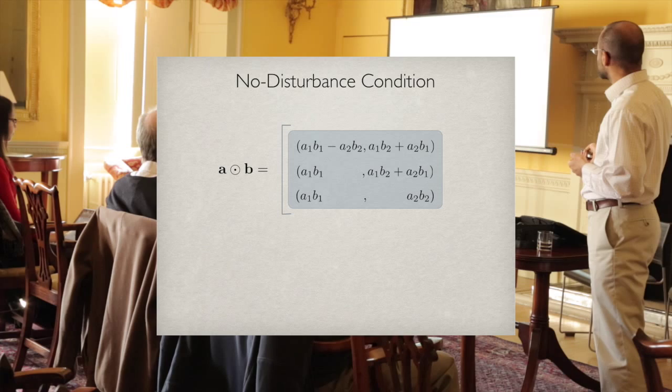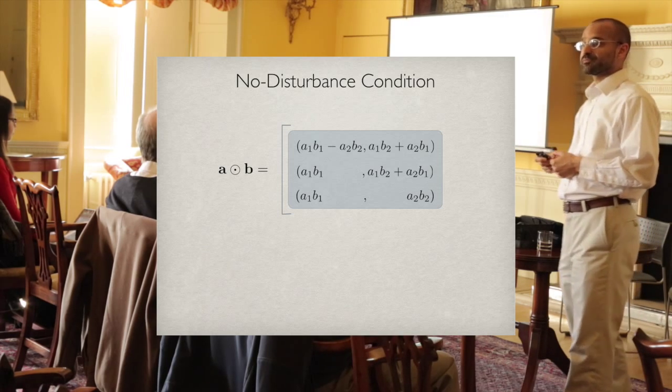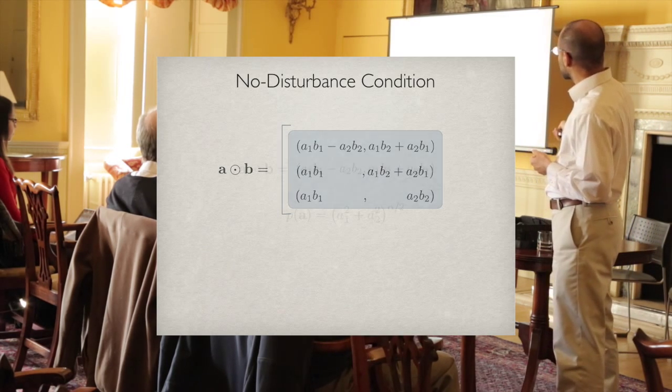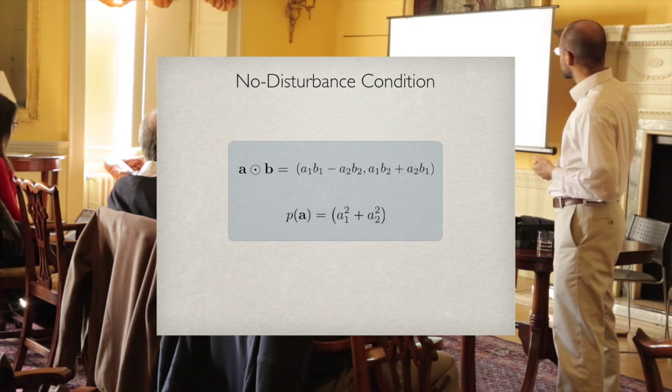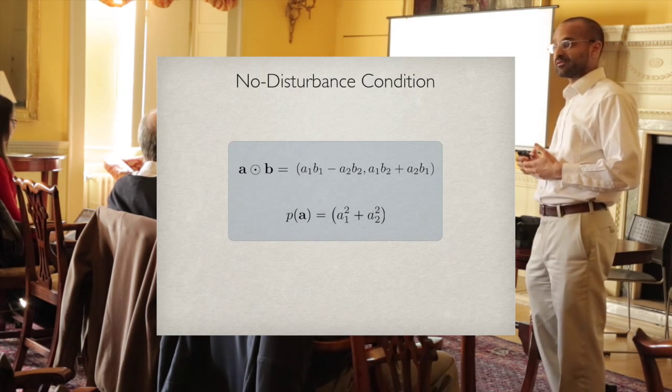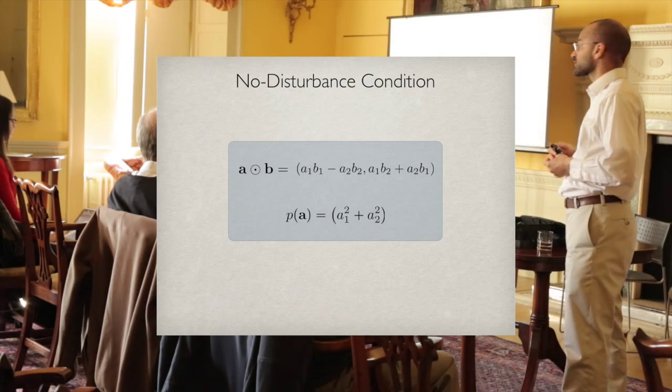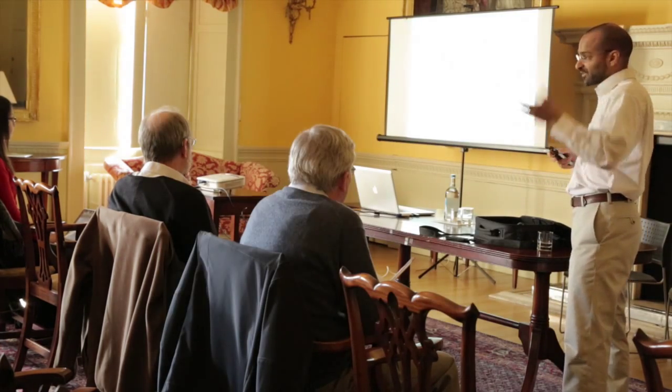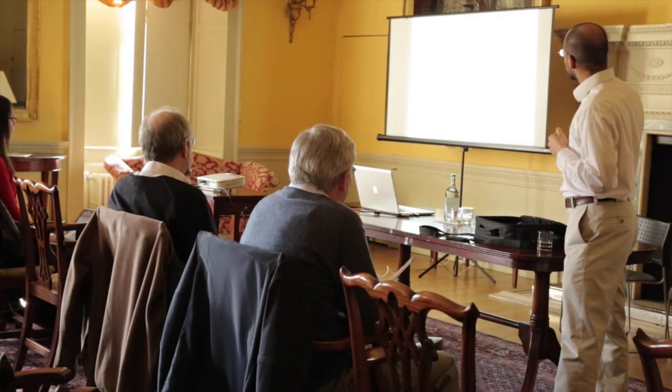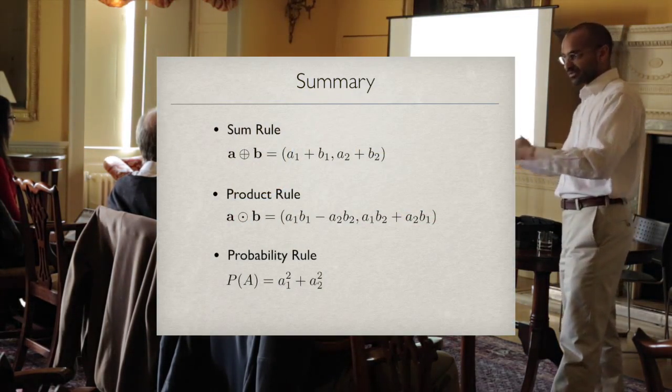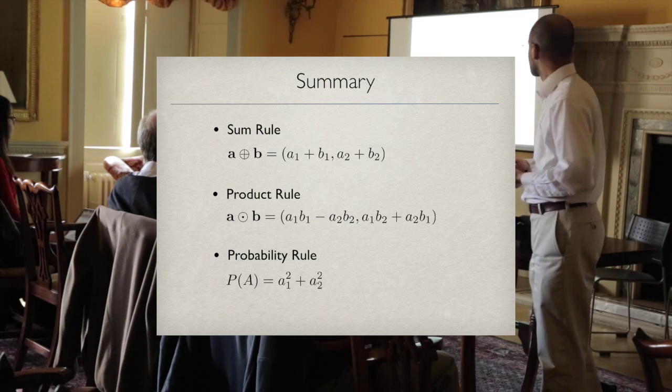When you impose this condition, it simply eliminates these two possibilities at the bottom. You get complex multiplication as the only possibility. In fact, it even fixes alpha to be 2. That's all you need to complete the derivation. I've given you a very quick run through. This is the summary, and these are Feynman's rules in the notation I developed.